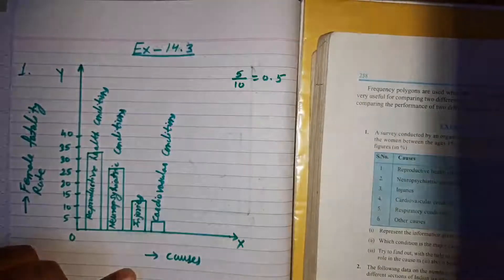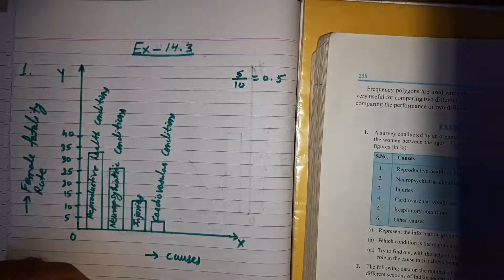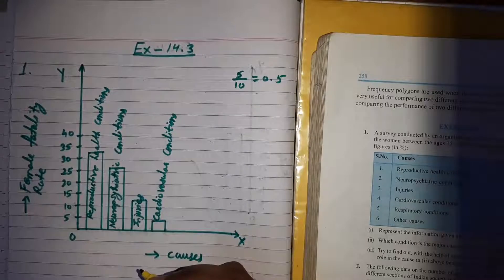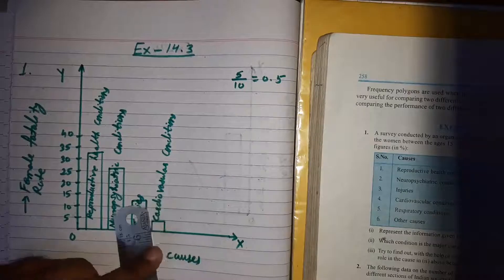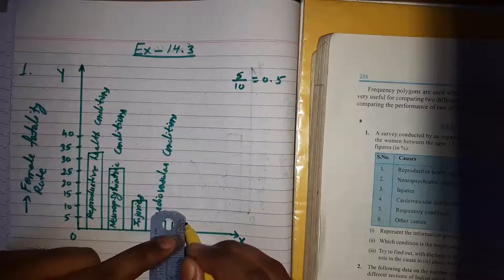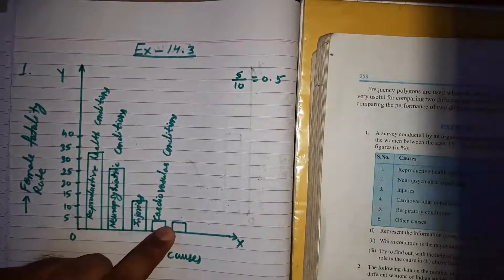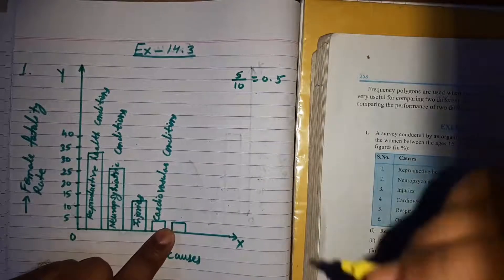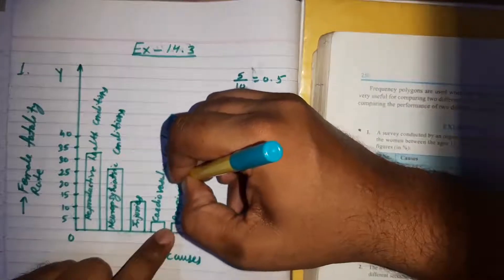The next cause is respiratory condition with frequency 4.1. It lies between 0 and 5. Covering 8 lines gives 4.0, which is nearly equal to 4.1. We draw the rectangle bar at 8 lines for respiratory conditions.